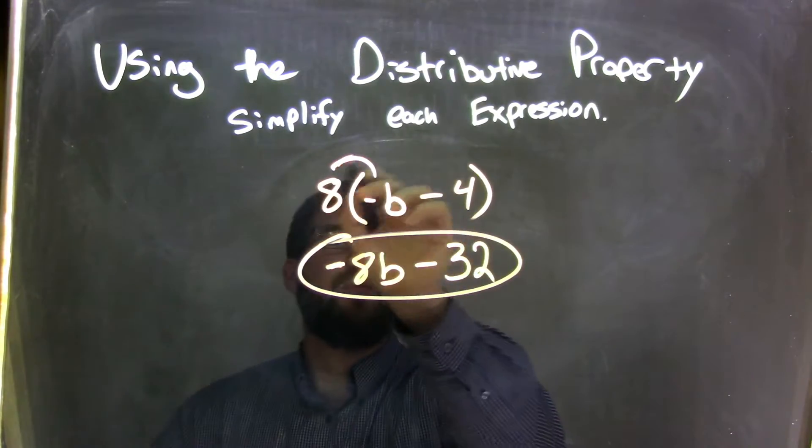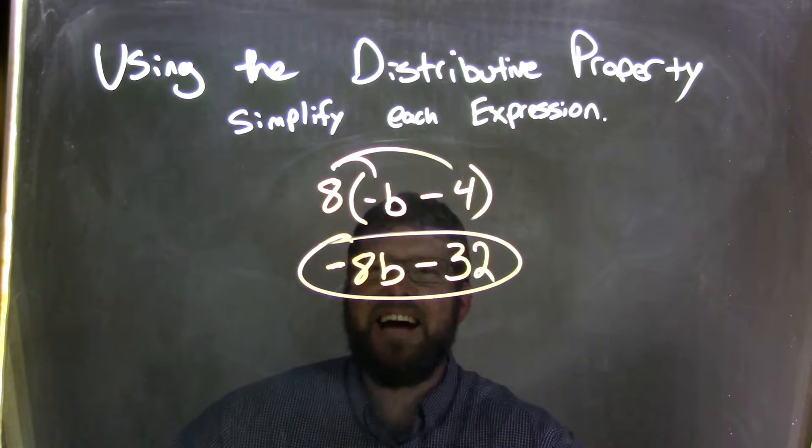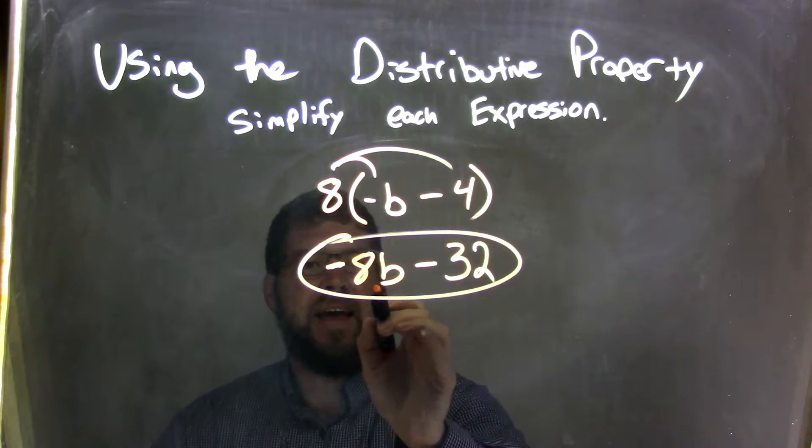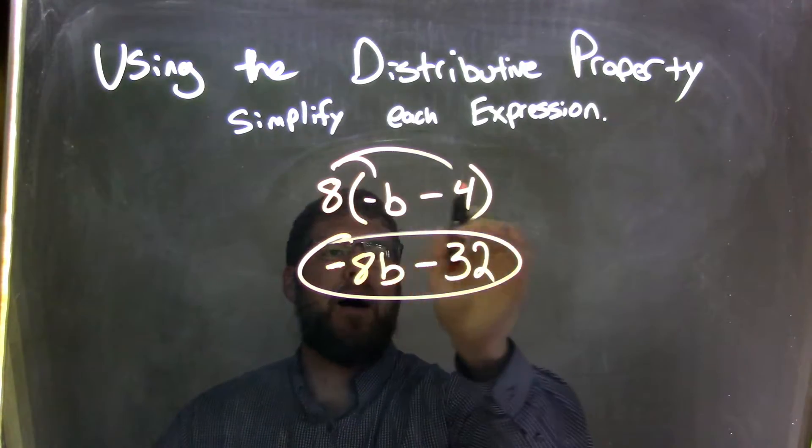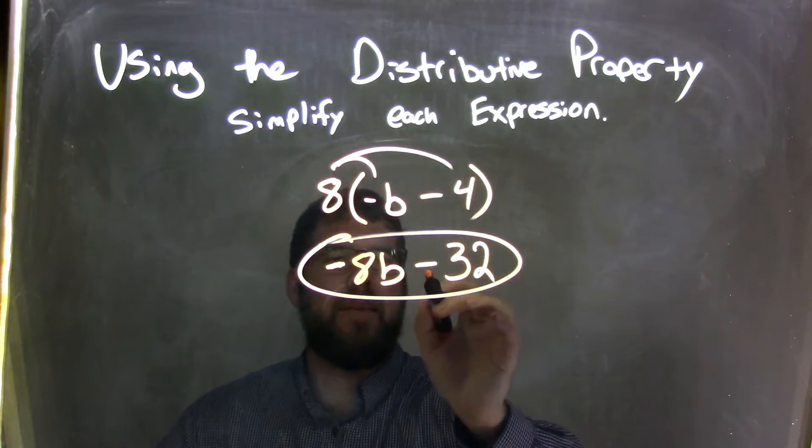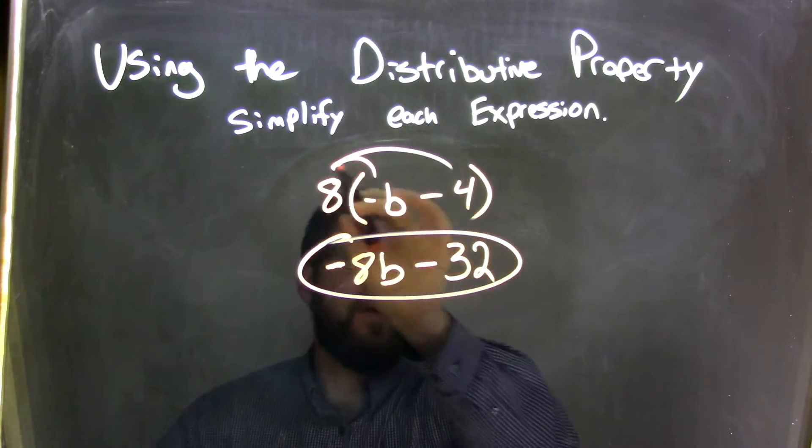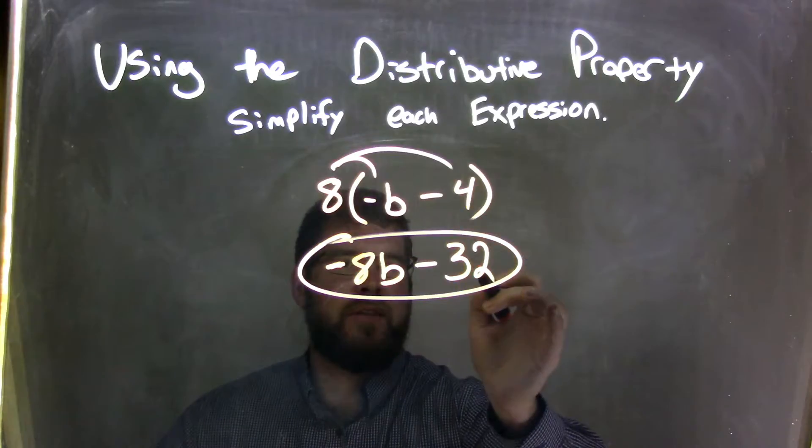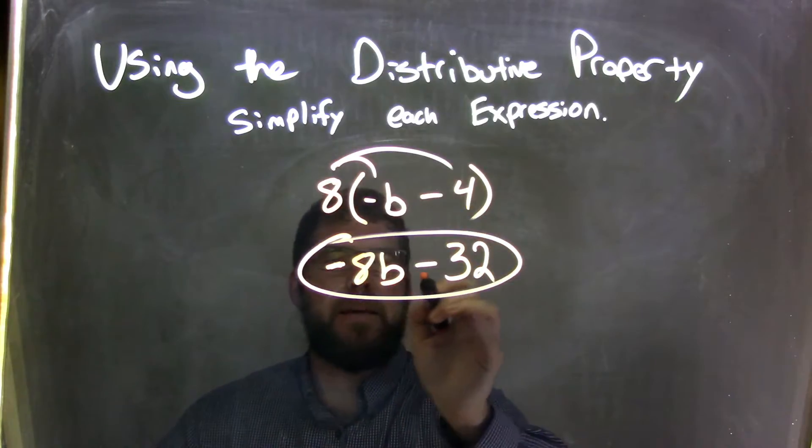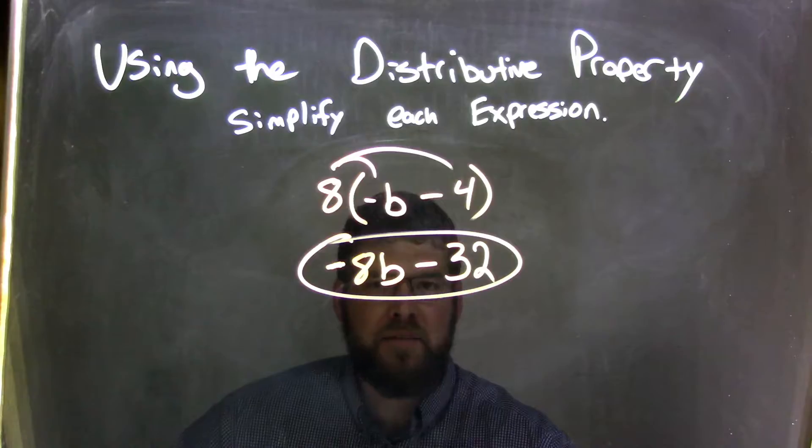So again, let's recap. We have 8 times negative b, which is negative 8b, and then we have 8 times 4, which is 32. We brought down the minus sign, so we have negative 8b minus 32, which is our final answer.